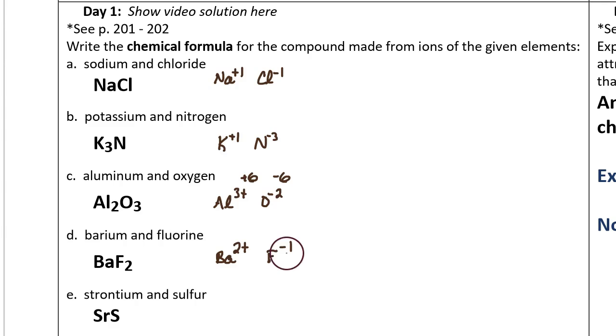Positive two plus negative one does not add up to a neutral compound. However, if we had two of the fluorides, then two times negative one is negative two, and that would balance out with positive two. So to show that there's two fluorides, you put a two as a subscript on the F.